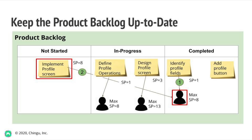Remember the Implement Profile Screen task we didn't assign during sprint planning? This task will carry over to the next sprint if we don't complete one of the first three tasks during the current sprint. However, if one of the three tasks is completed, we can assign Implement Profile Screen to the first available team member. Since this task requires eight story points, and all three members have completed an average of at least eight story points in prior sprints, whoever finishes their task first can start this one. Six weeks may sound like a long time, but it's not — this is why it's important to begin working on tasks as soon as the team's capacity is available.